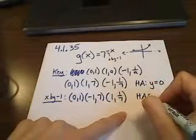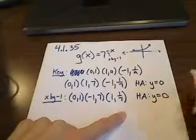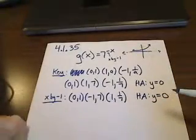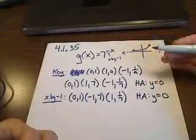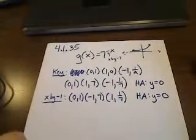And the horizontal asymptote is not affected because we're not doing anything to it. It doesn't have an x-coordinate, it's just y = 0. And so we're not moving things up and down, so it's just going to stay as y = 0.